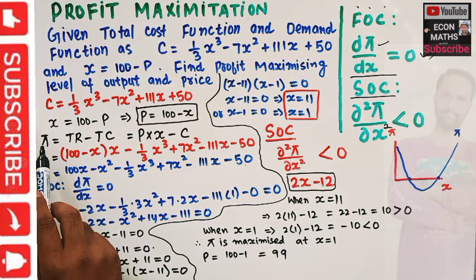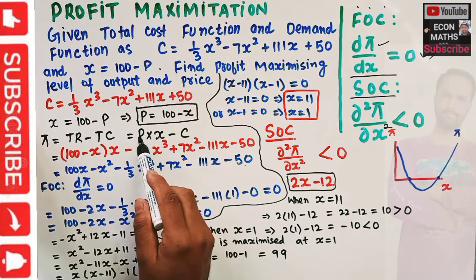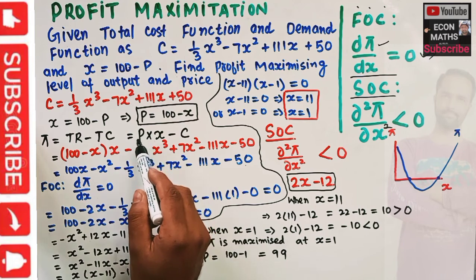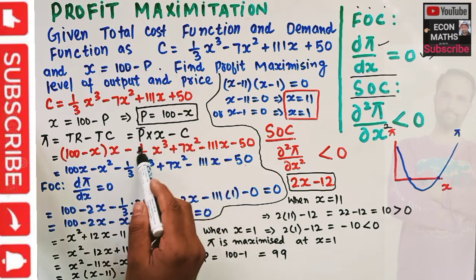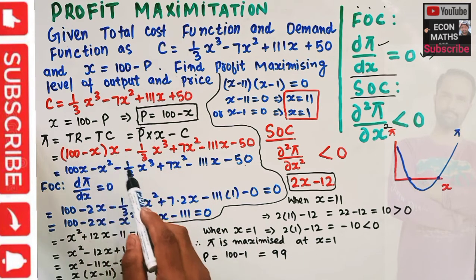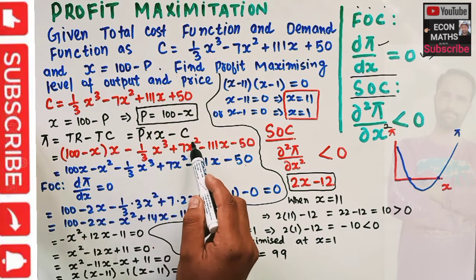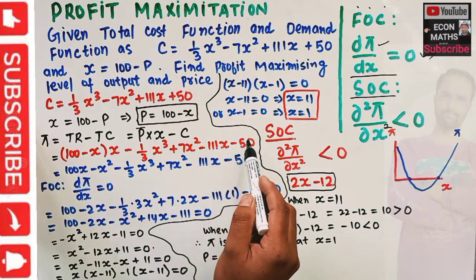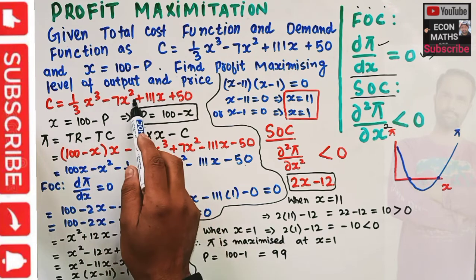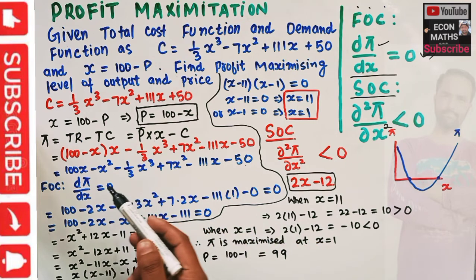Now, profit equals total revenue minus total cost. Total revenue is price times output, so π = P·X - C. Substituting P = 100 - X, we get (100 - X)·X minus the cost function (1/3)X³ - 7X² + 111X + 50. Distributing the negative sign: the first term is negative, the second becomes positive, the third negative, and the fourth negative.